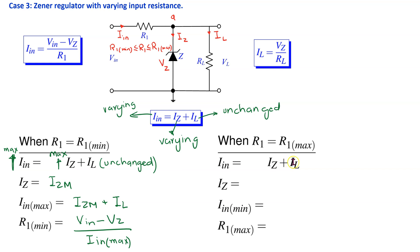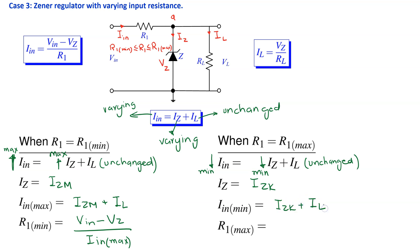To find R1_maximum: when R1 is at its maximum, IIN assumes its minimum value, and IZ is forced to its minimum value IZK. Thus IIN_min = IZK + IL, and R1_max = (VIN − VZ) / IIN_min. This shows how to find the minimum and maximum values of R1 for which the circuit will provide regulation.